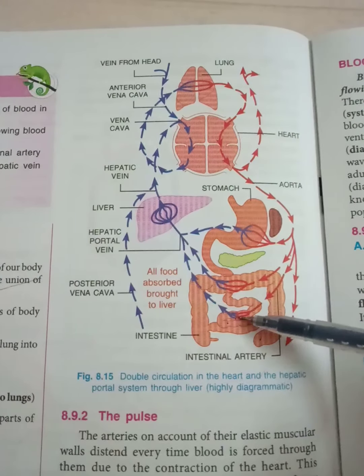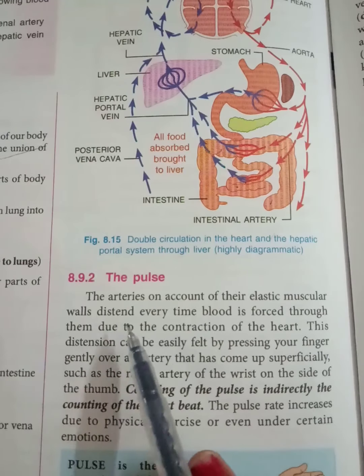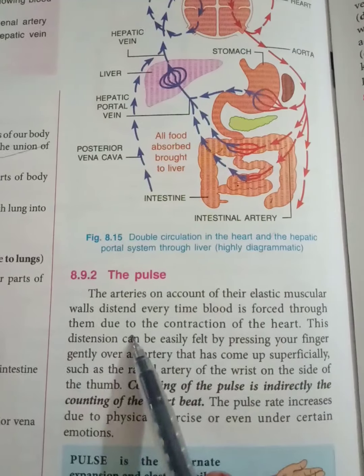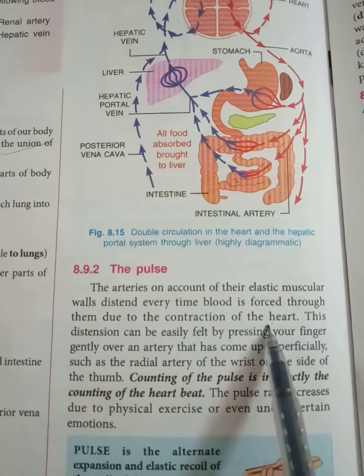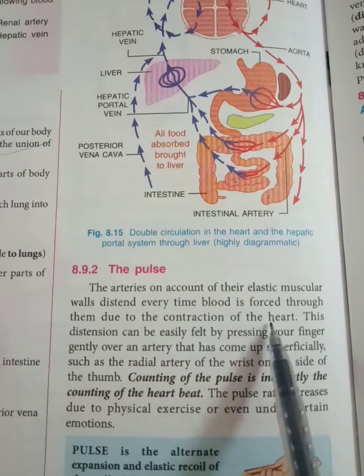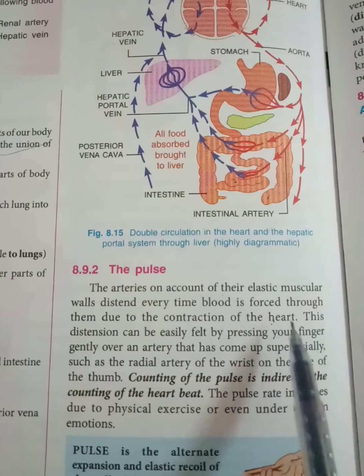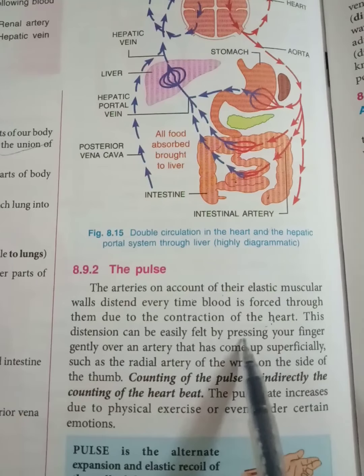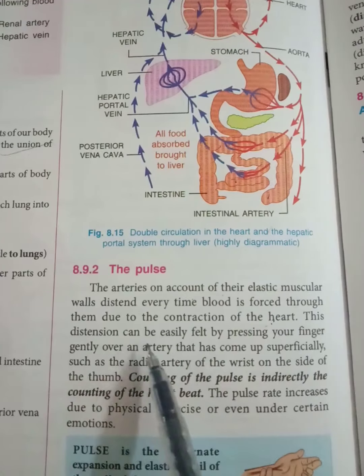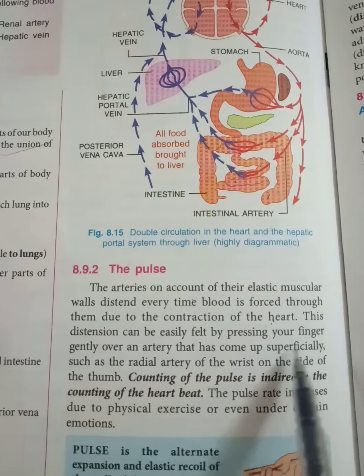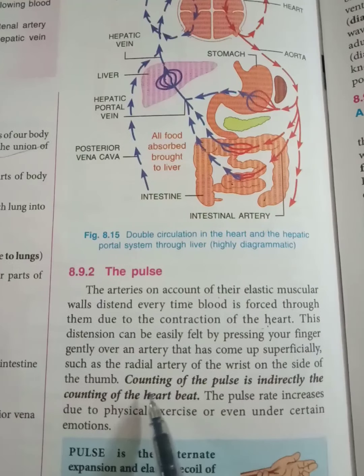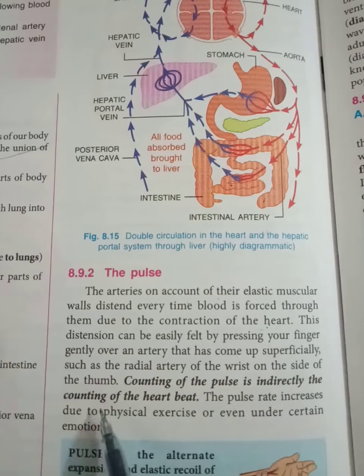Next comes pulse. Arteries, on account of their elastic muscular wall, distend every time blood is forced through them due to contraction of the heart ventricles, and that jerk is felt in the arteries. This tension can be easily felt by pressing your finger gently over an artery that lies superficially, such as the radial artery of the wrist on the side of the thumb.